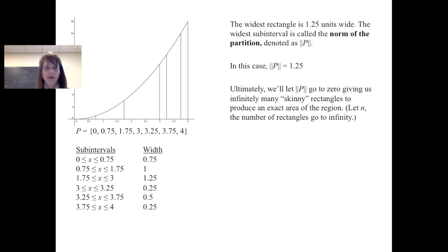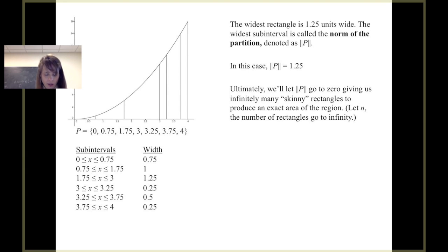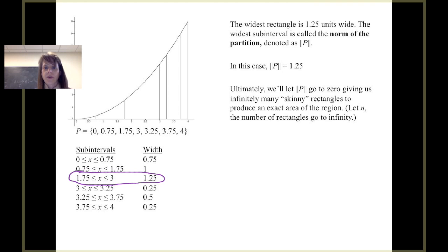Here we see the same graph with the partition and subintervals with their widths shown. The widest subinterval is from 1.75 to 3. When we note the widest subinterval of a partition, we call that the norm of the partition. So in this case, the norm of our partition P is 1.25.